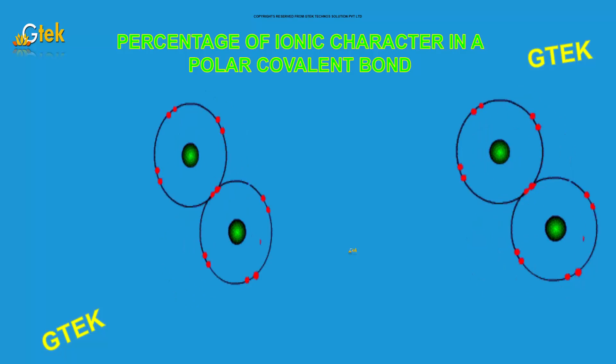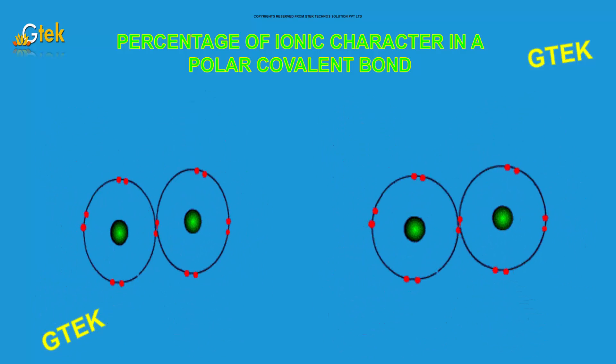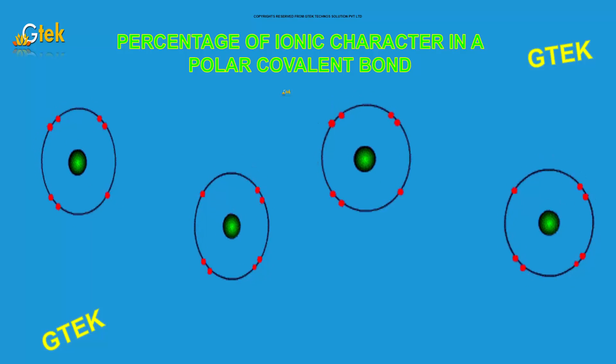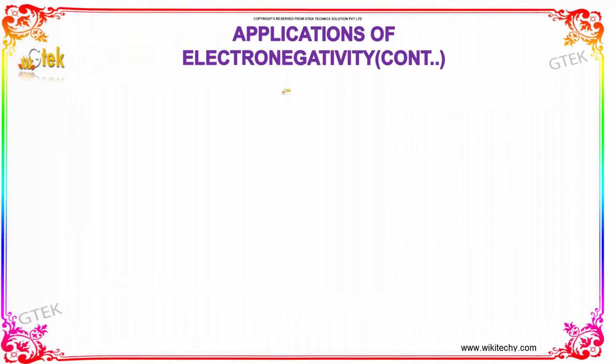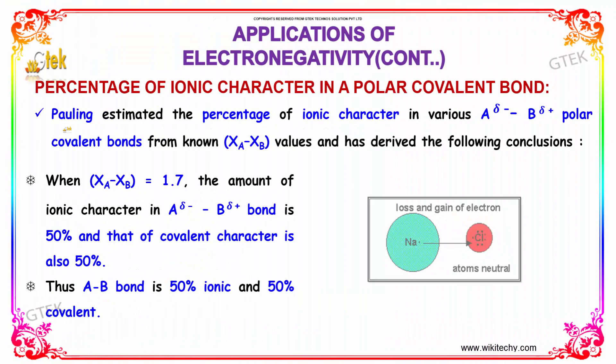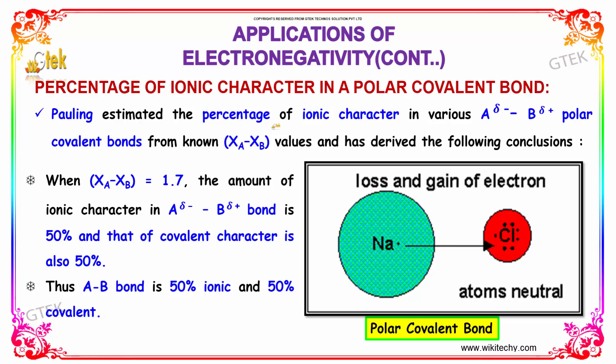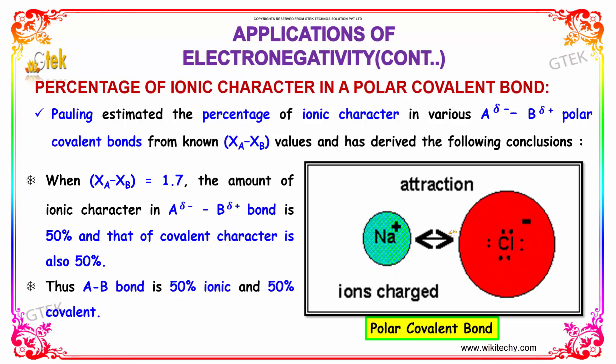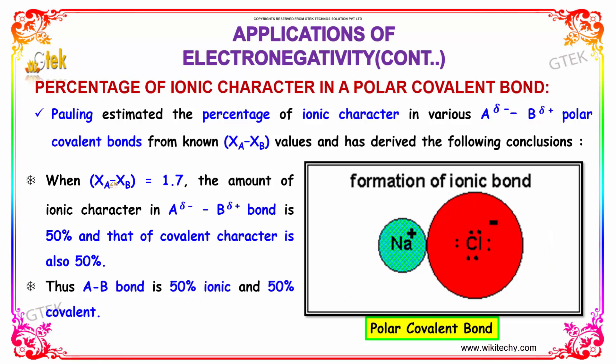This is more interesting. We are going to talk about the percentage of ionic character in a polar covalent bond. Pauling estimated the percentage of ionic character in various A delta minus B delta plus polar covalent bonds from the known xA and xB values.